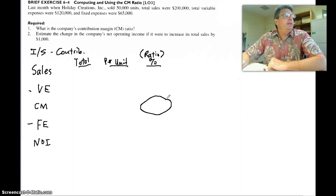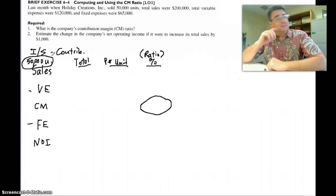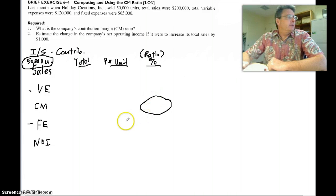We sold 50,000 units. Where does that go? Well actually that doesn't go in one of the columns. Remember I like to put it right here, just so we remember how many units we're talking about.